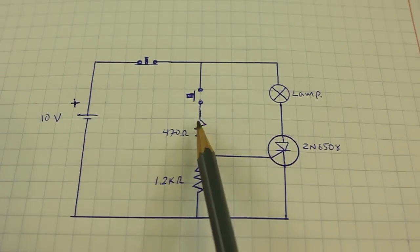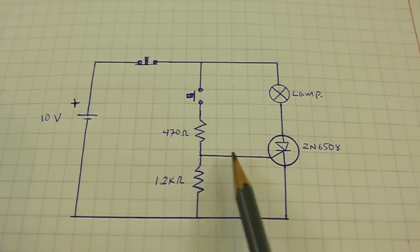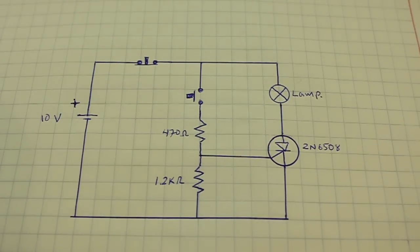We need this resistor here because the current that must flow through the gate must be small. And this other resistor is needed to add stability and avoid false trigger of the thyristor.